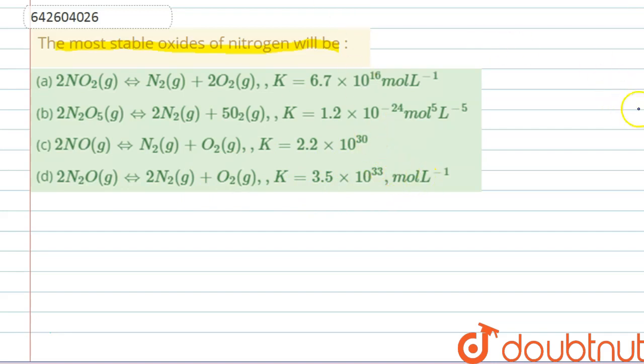We know that equilibrium constant K is the ratio of equilibrium constant for forward as well as the backward reaction. We are given on the left-hand side the oxides and on the right-hand side their composition or reactions.